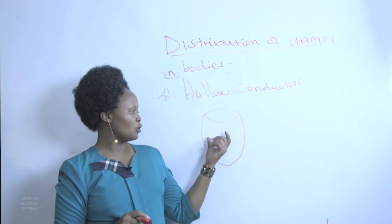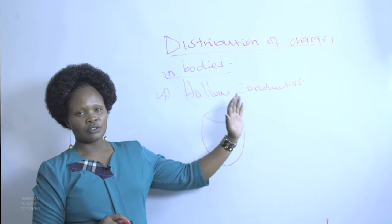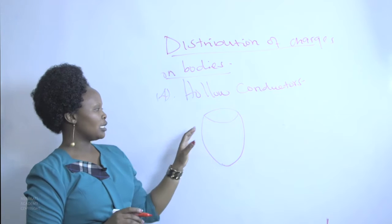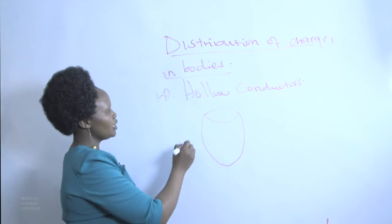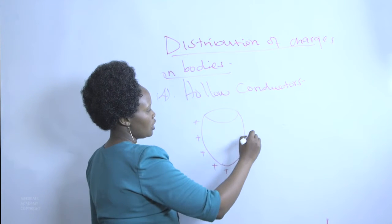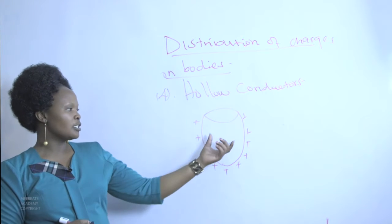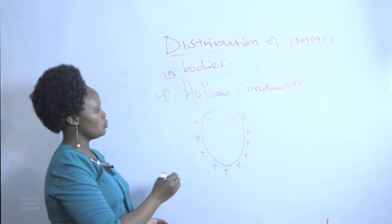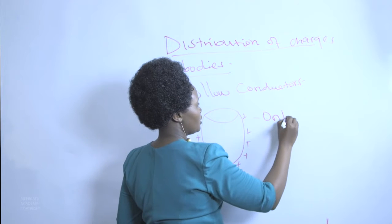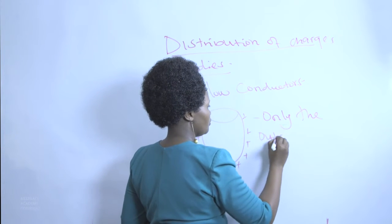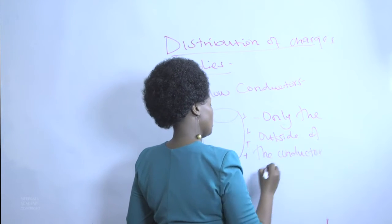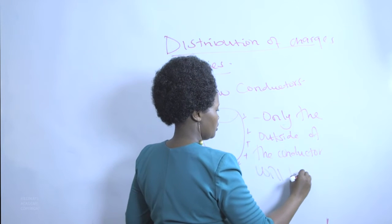Now for conductors that have holes — hollow conductors — we only concentrate on the outside. When a conductor has a hollow part, the charge is concentrated on the outside of the conductor only. Inside the hollow conductor there is no charge at all — only the outside of the conductor will have charge.